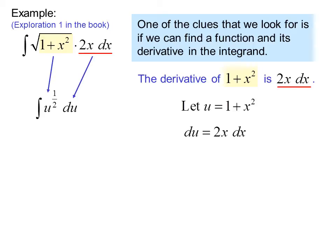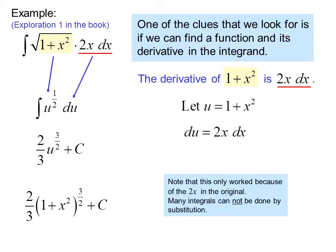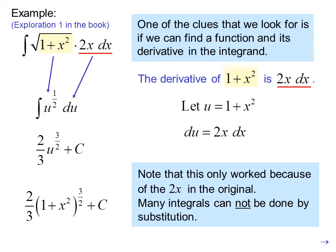So substituting we get the integral of u to the 1 half du. Raising the exponent by 1 and multiplying by the reciprocal, we get 2 thirds u to the 3 halves plus c. And then we substitute back in the value of u. So we have 2 thirds, 1 plus x squared, quantity to the 3 halves plus c. Note that this only worked because of the 2x in the original. Many integrals cannot be done by substitution.